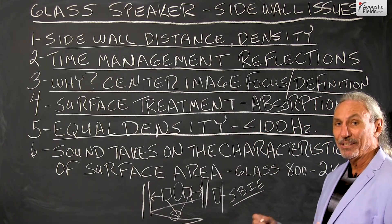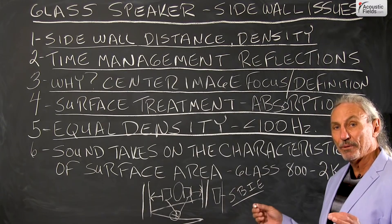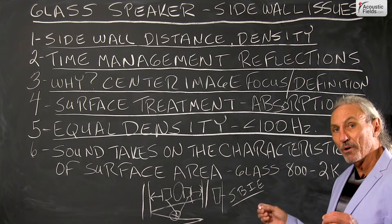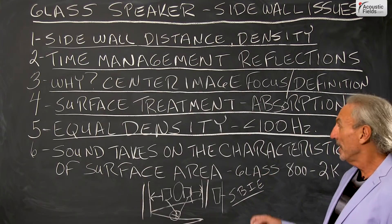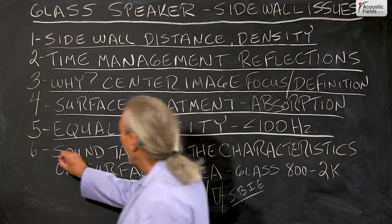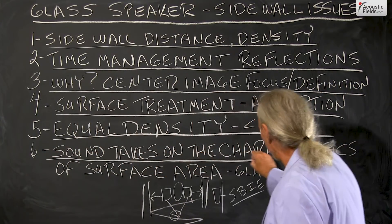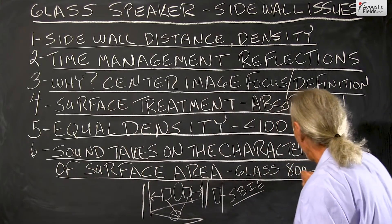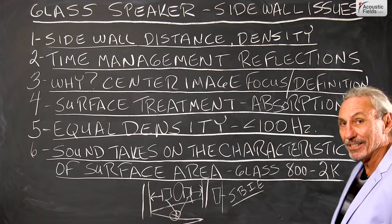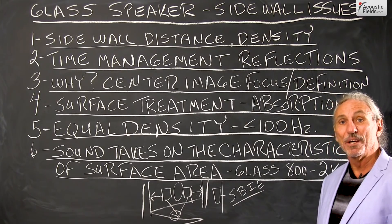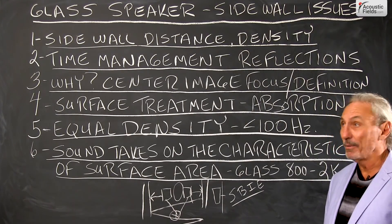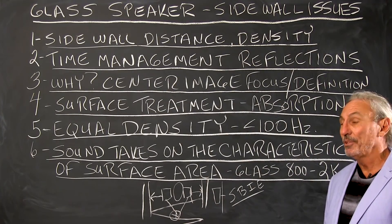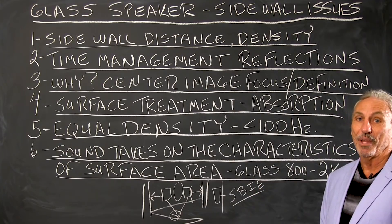This all adds up. Good quality sound is about doing a lot of little things in the correct order, so it's good to start doing all the little things correctly and then we won't have issues as we go down the road. Remember my classic saying: sound takes on the characteristics of the surface areas that it strikes. Glass has that 800 to 2K aberration that we simply can't have in our mixes. Hope this helps — keep those speakers away from the sidewalls, and definitely do not have glass sidewalls.